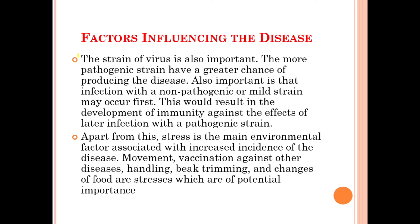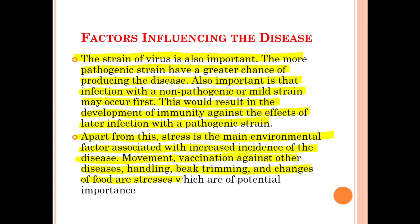The next factor influencing Marek's disease is the strain of the virus. The more pathogenic strain has a greater chance of producing disease. Also important is that infection with a non-pathogenic or mild strain may occur first — this would result in the development of immunity against the effect of a later infection with the pathogenic strain. Apart from this, stress is the main environmental factor associated with the increased incidence of the disease.